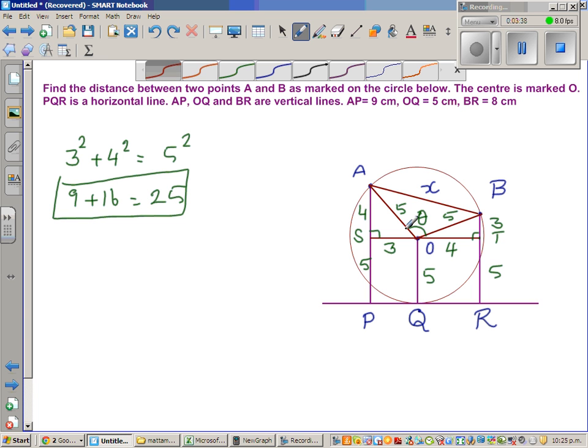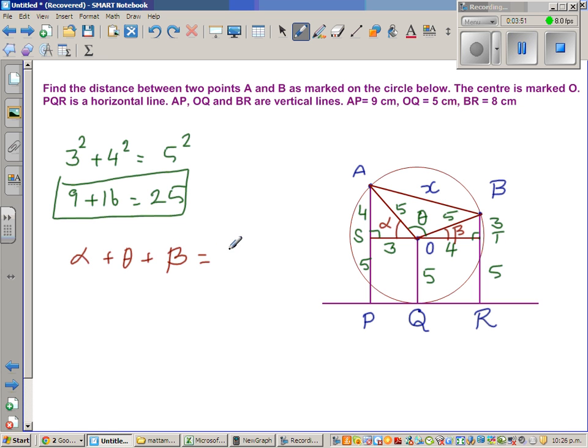Can I say alpha plus theta plus beta is 180 degrees? So can we find alpha? So can we say sine alpha? Alpha is opposite over hypotenuse, which is 4 over 5, which is 8 over 10, which is 0.8. So alpha is sine inverse of 0.8.